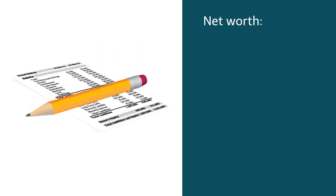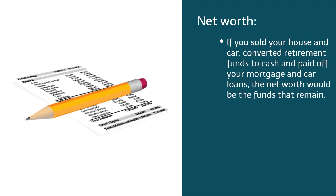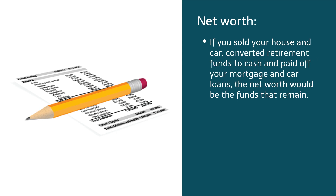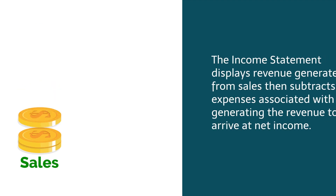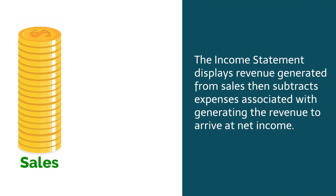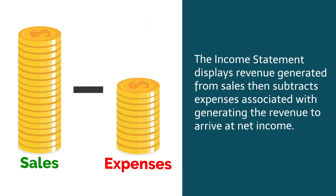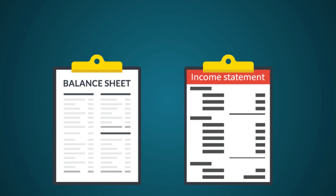Liabilities include your mortgage and car loans. The final section of the balance sheet is the net worth or capital. An easy example of this is if you sold your house and car, converted retirement funds to cash, and paid off your mortgage and car loans, the net worth would be the funds that remain. A credit union's balance sheet is similar to your own personal financial statements. The income statement displays revenue generated from sales and subtracts expenses associated with generating revenue to arrive at net income. In addition to financial statements, we will be looking at several ratios which help explain the relationship between the credit union's balance sheet and income statement.